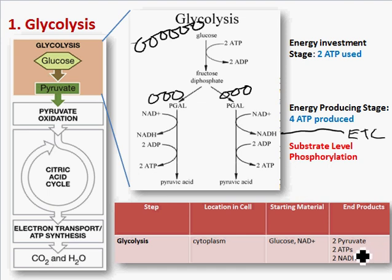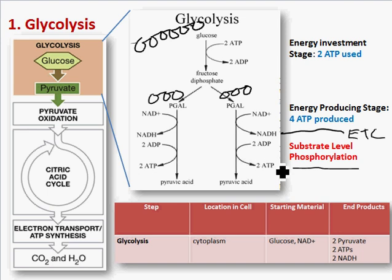This process of creating ATP is called substrate-level phosphorylation. An enzyme takes a phosphate off the intermediates in glycolysis and adds it to ADP to create ATP — when you add a phosphate to something it's called phosphorylation. This is important to keep straight because later we'll see oxidative phosphorylation, which creates ATP in the presence of oxygen. Overall in glycolysis we create two pyruvates, two ATPs, and two NADH electron carriers.